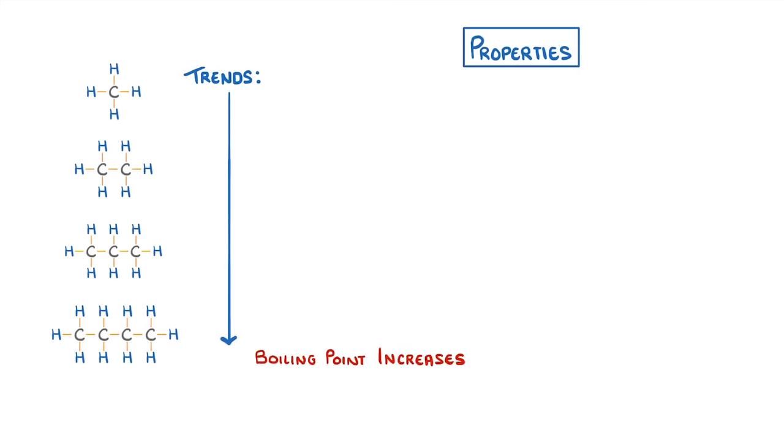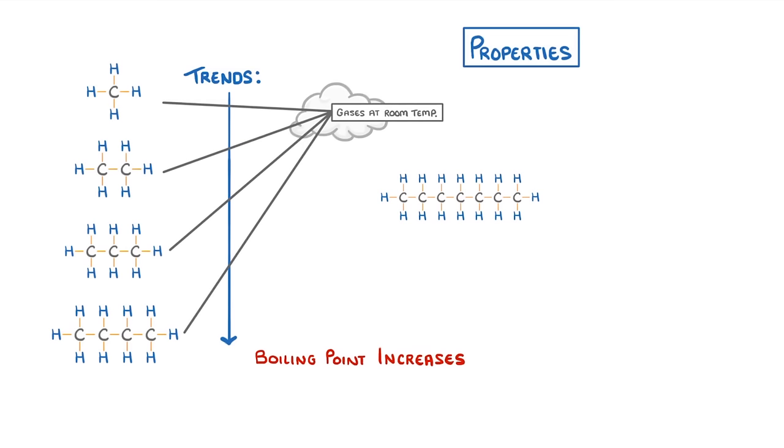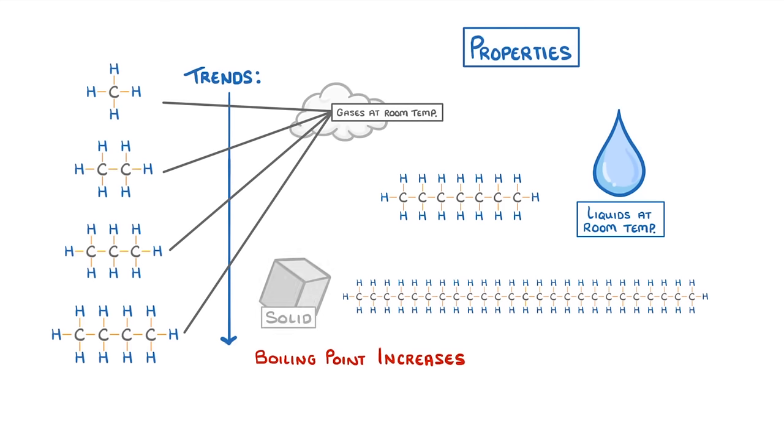So these four here all have fairly low boiling points, and so exist as gases at room temperature, because they have the shortest chains. However, longer alkanes, with more than four carbons, are liquids at room temperature. And if the chains are really long, then they could be solid.